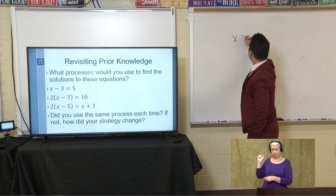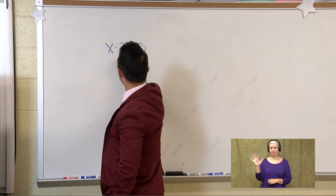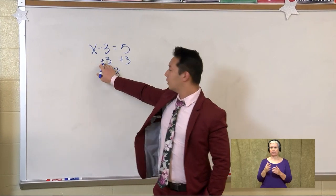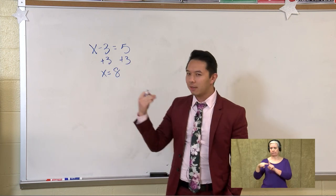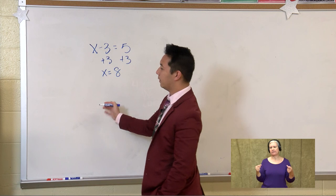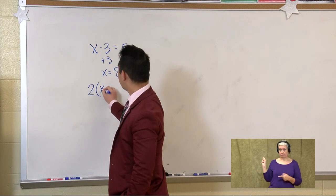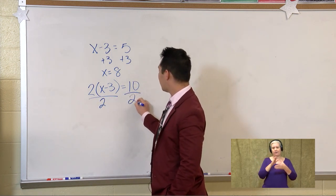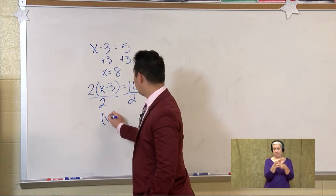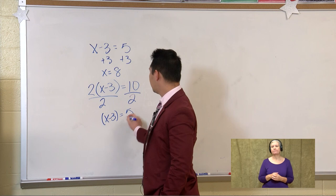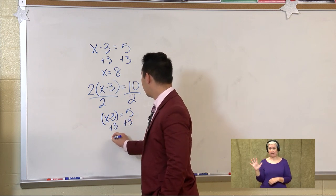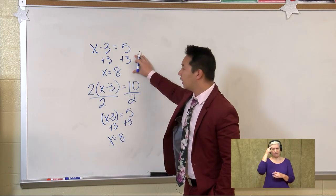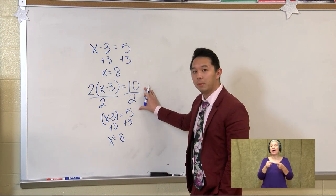Taking a look at the first one, we've got x minus 3 is equal to 5. The solution here is x is equal to 8, where we perform the inverse operation of adding 3 to both sides. For the second, 2 times the quantity x minus 3 is equal to 10. We perform inverse operations, dividing both sides by 2, leaving us with x minus 3 is equal to 5. Then adding 3 to both sides again, we have x is equal to 8. The process involved performing inverse operations each time.